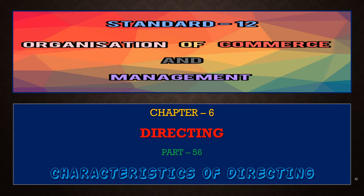Part 56 covers the characteristics of directing. Direction means to get the workers, make them aware of the work, provide them guidance, and maintain their enthusiasm for the work. According to Koons and O'Donnell, direction is the executive function of guiding and observing subordinates. In this part, we will study the different characteristics of directing.